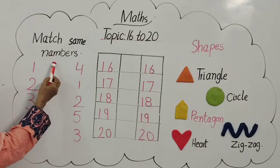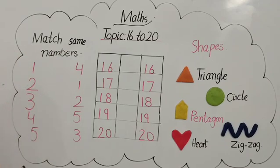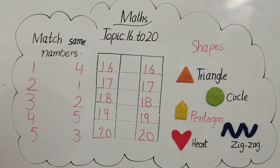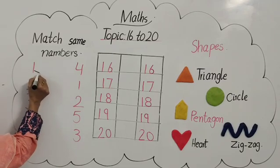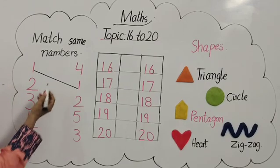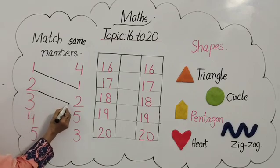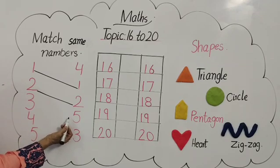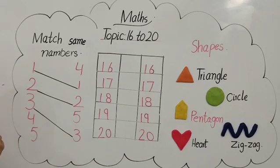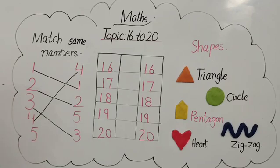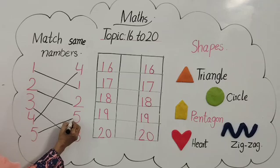Okay, now make the same numbers. Look here — here is 1. Now find another one from this side. Where is 1? Good. Now look here — which number is this? Number 2. Okay, find out number 2 from here. Good. Now number 3 — where is number 3? Here is number 3. Really good. Now number 4. Good. Now which number are you making? 5. Number 5. Very good.